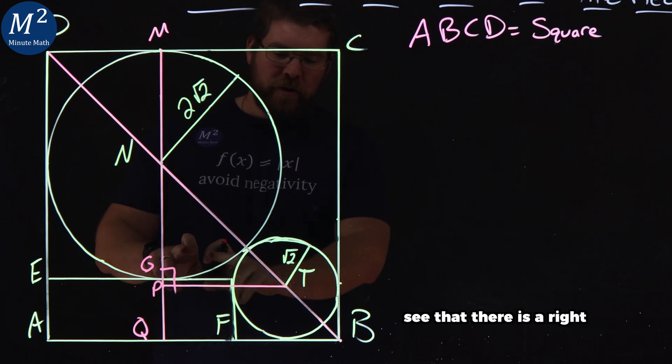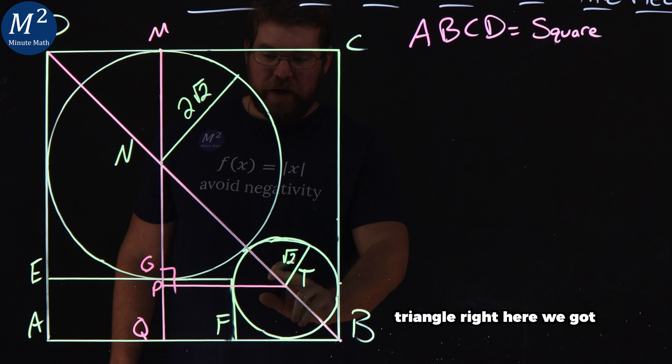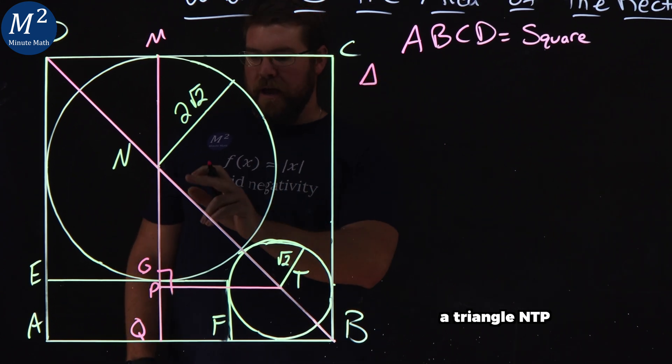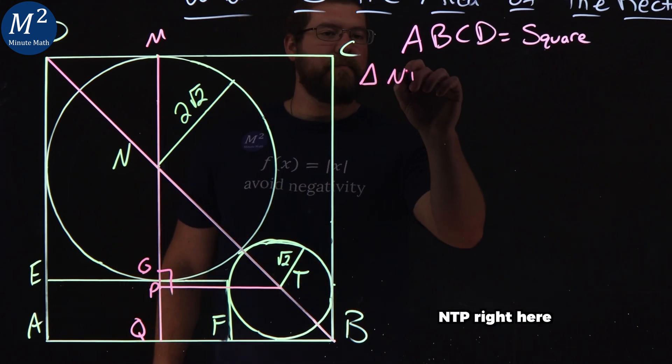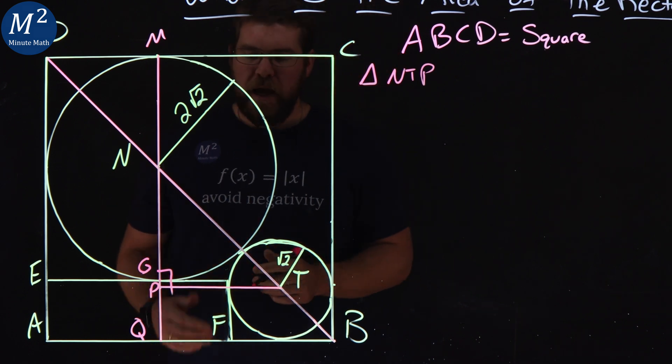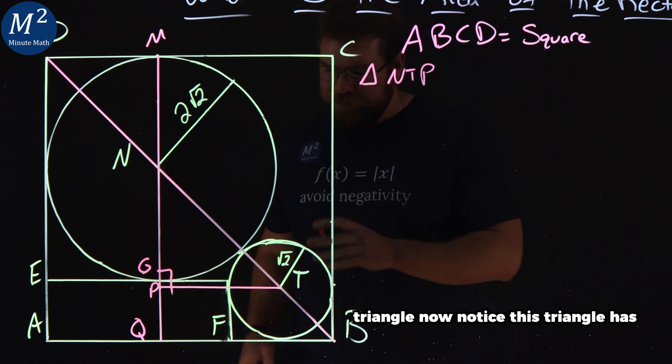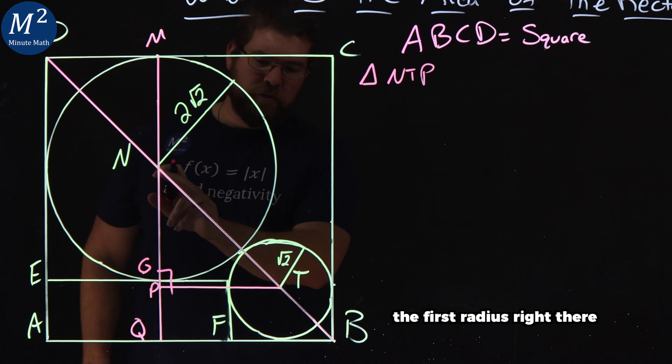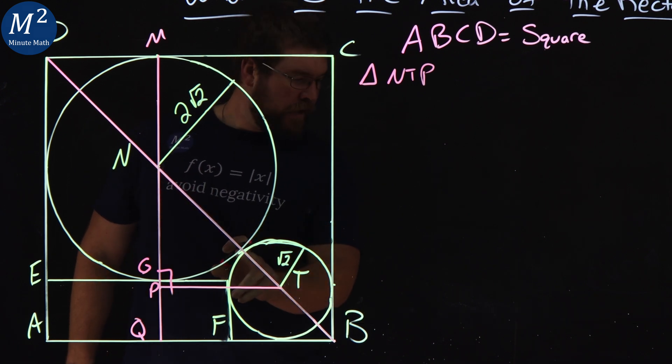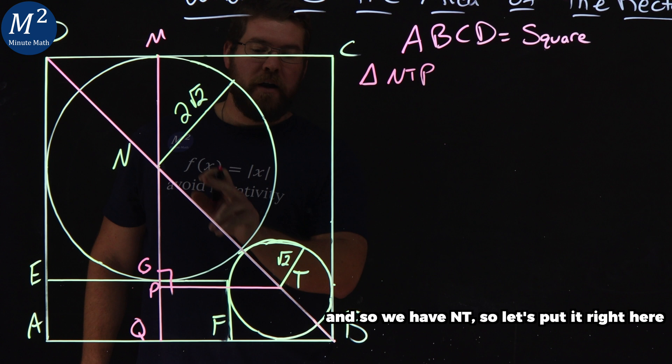I see that there is a right triangle right here. We got our triangle NTP. NTP right here. And I want to see if I can figure out the length of this triangle. Now, notice this triangle has this first radius right there. And then we have a second radius. So we have NT.